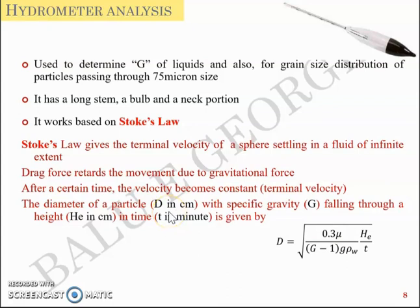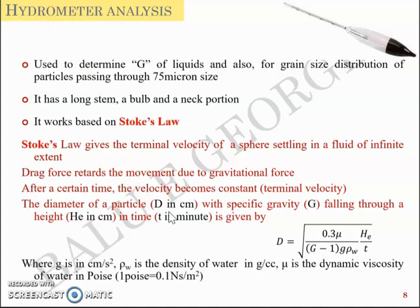Fundamentally hydrometer analysis is sedimentation analysis based on Stoke's Law. Before moving into the procedure, this is just to remind you about the units: g should be in centimeter per second squared, ρw is density of water in gram per cc, μ is dynamic viscosity of water in poise where one poise equals 0.1 Newton second per meter square. You will get d in centimeter when you follow the units mentioned here.